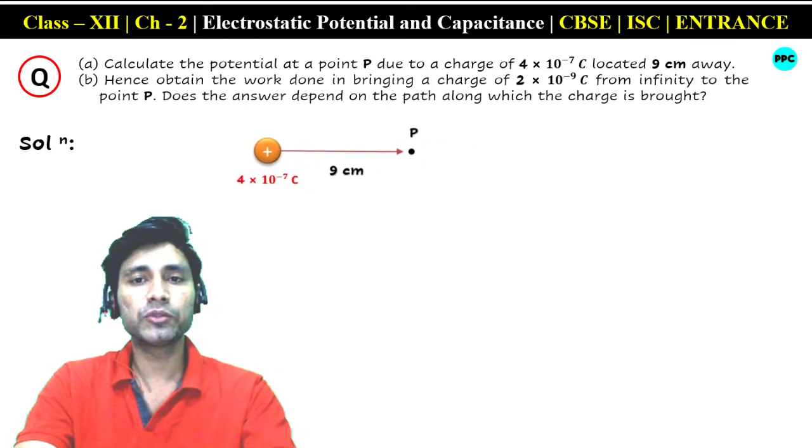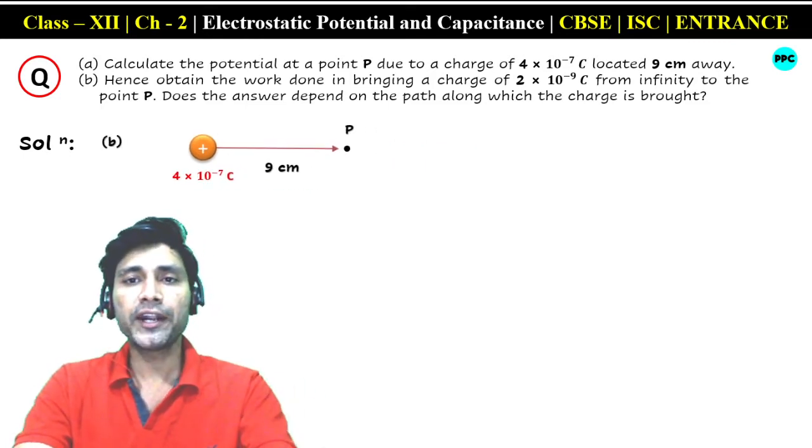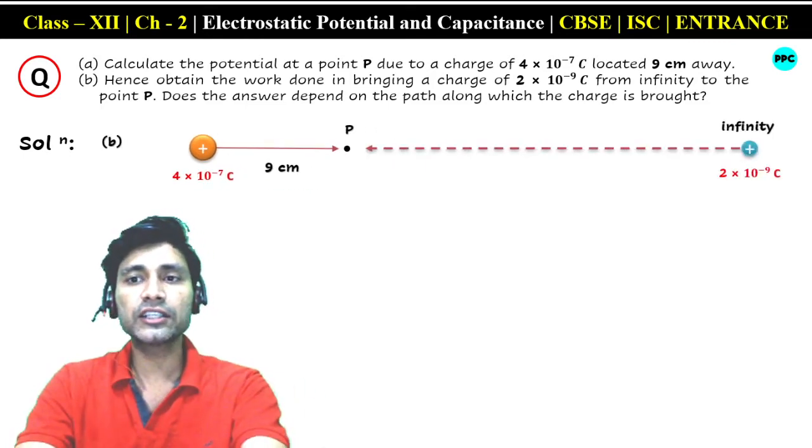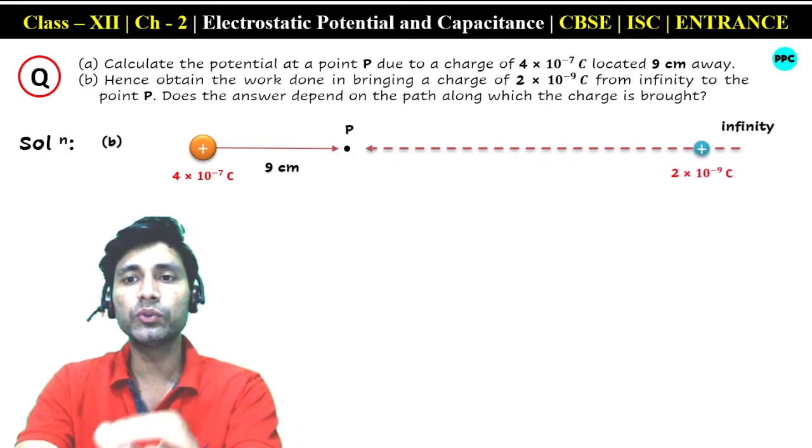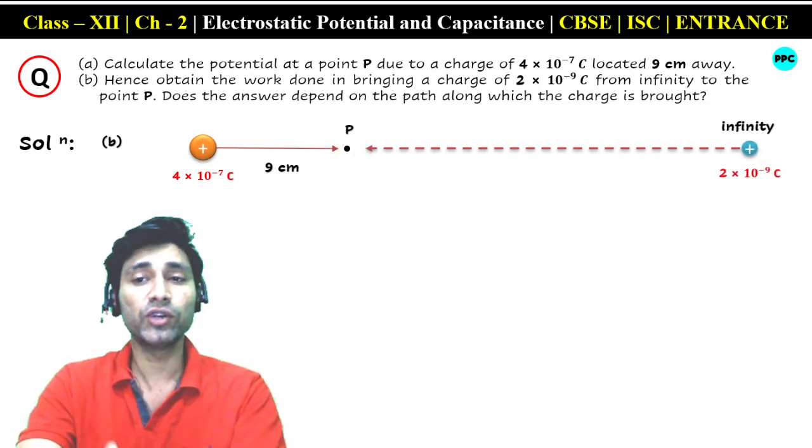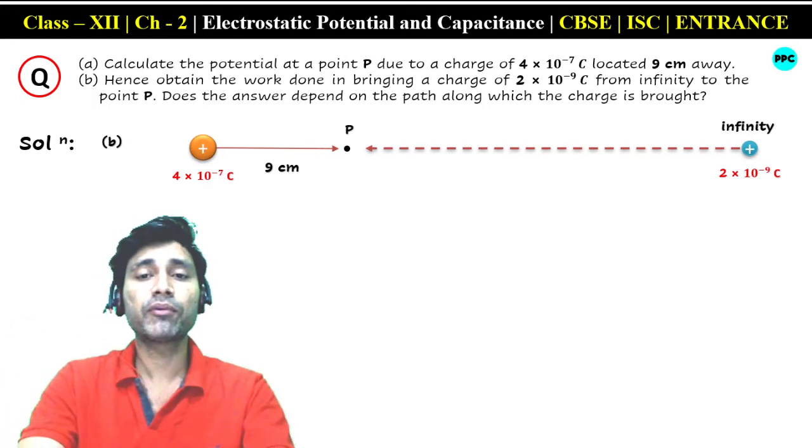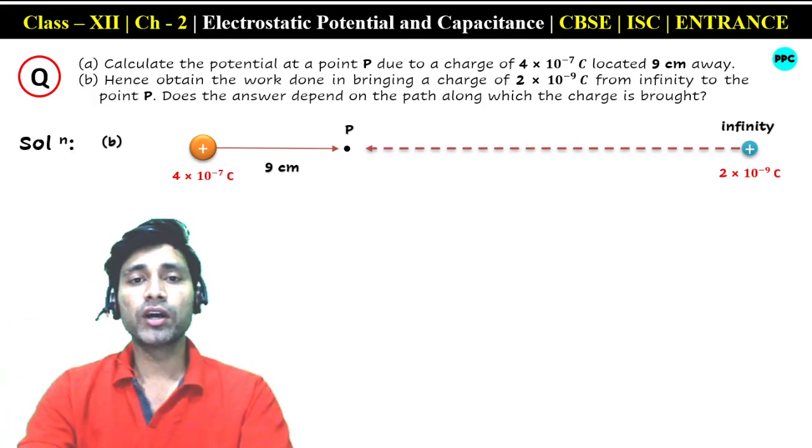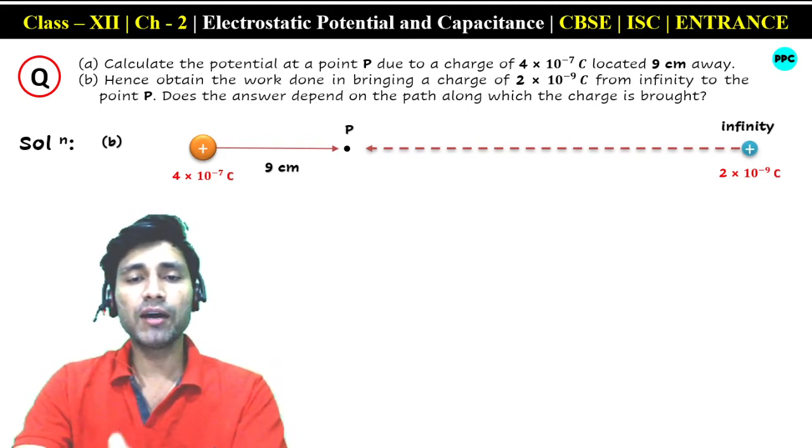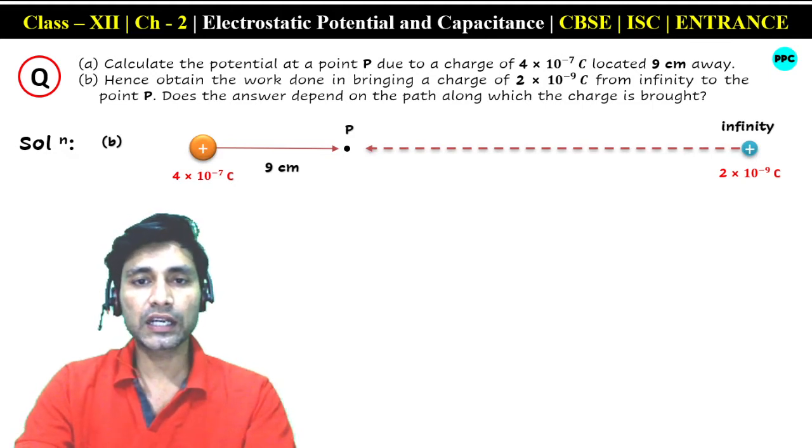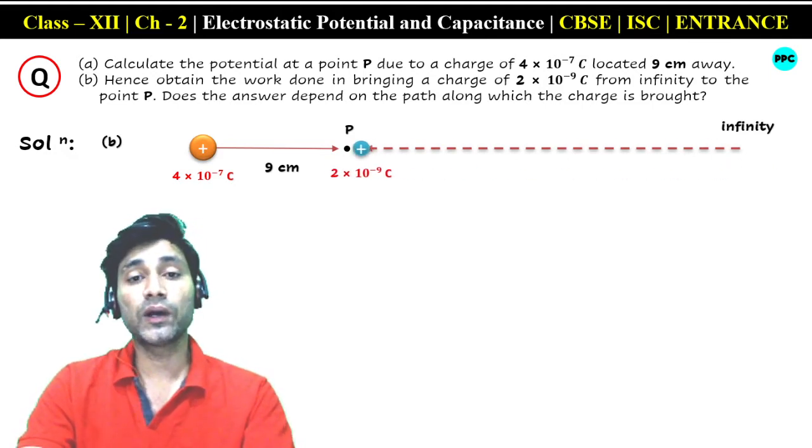In the second part, it asks: if a charge is brought from infinity to point P, and that charge has value 2 × 10⁻⁹ coulomb, what will be the work done? If we bring this charge to point P, the work done formula will be: charge times potential of that point.